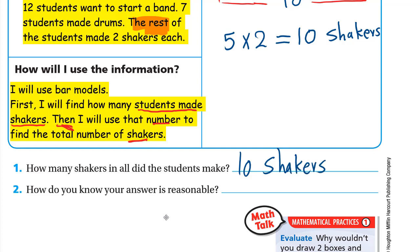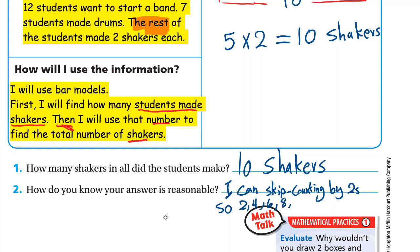How do you know your answer is reasonable? We can skip count by twos: 2, 4, 6, 8, 10 — that's five counts, giving us 10 shakers. This confirms our answer is reasonable.